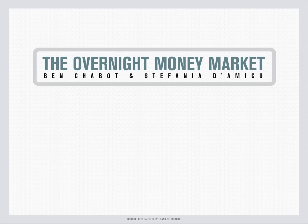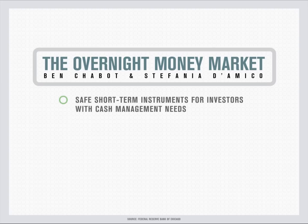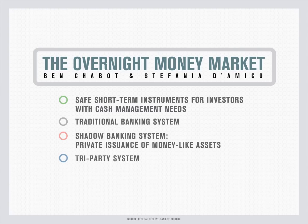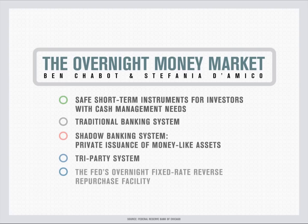I will start by introducing various safe short-term investments available to investors with cash management needs. Then I will briefly describe the traditional banking system and elaborate on what we call the shadow banking system. We will talk about how the Fed interacts with the traditional banking system to target the overnight federal funds rate and how the Fed can use its new tools — the interest on excess reserves and reverse repurchase agreements — to influence overnight interest rates in both the traditional and the shadow banking systems.